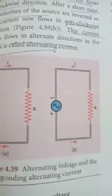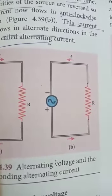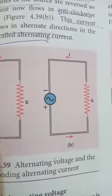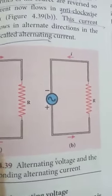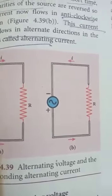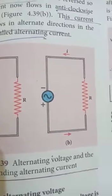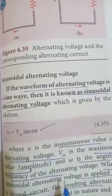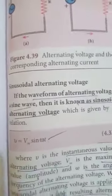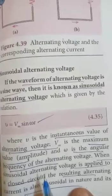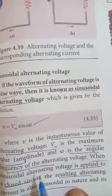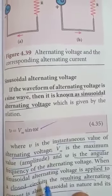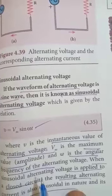Next, sinusoidal voltage. This alternating voltage or alternating current is in the form of a sine wave — it is called sinusoidal alternating voltage or sinusoidal alternating current. It is given by the relation V = Vm sin ωt. Here, V is the instantaneous voltage, Vm is the maximum or peak voltage, and ω is the angular frequency of the alternating voltage.